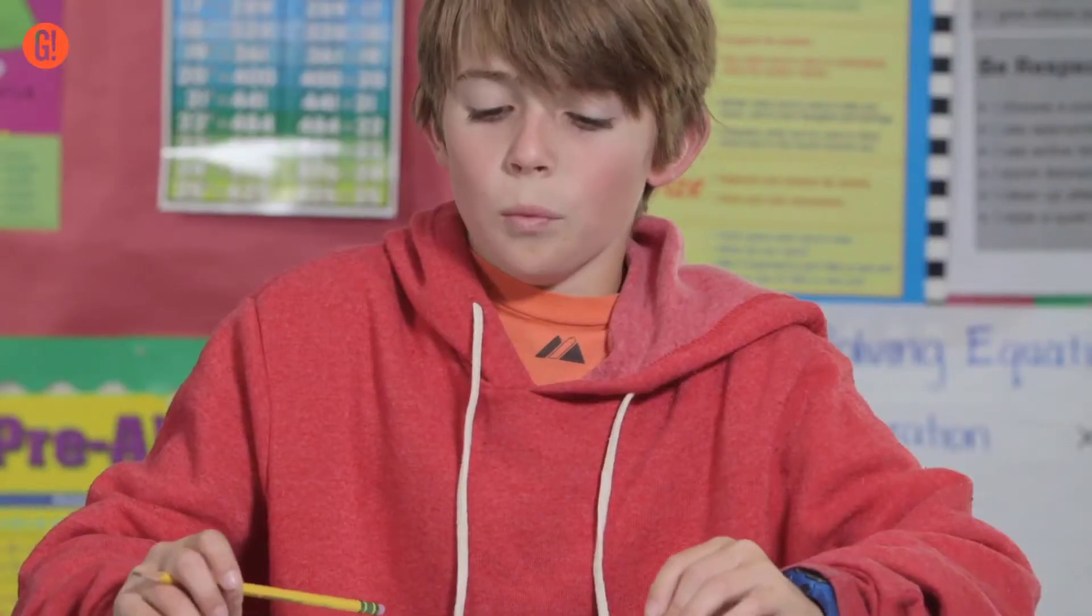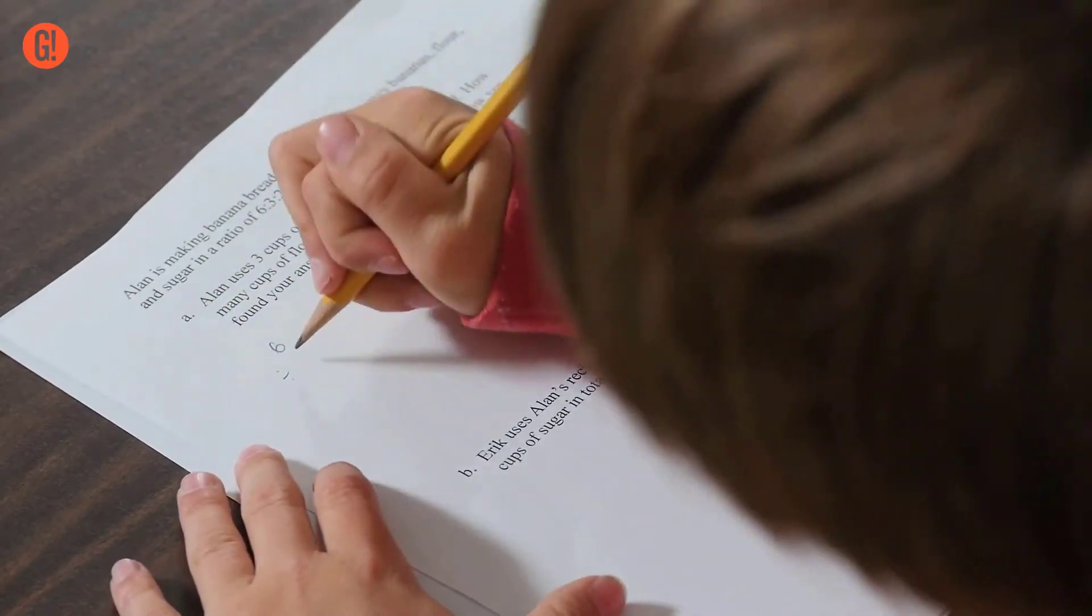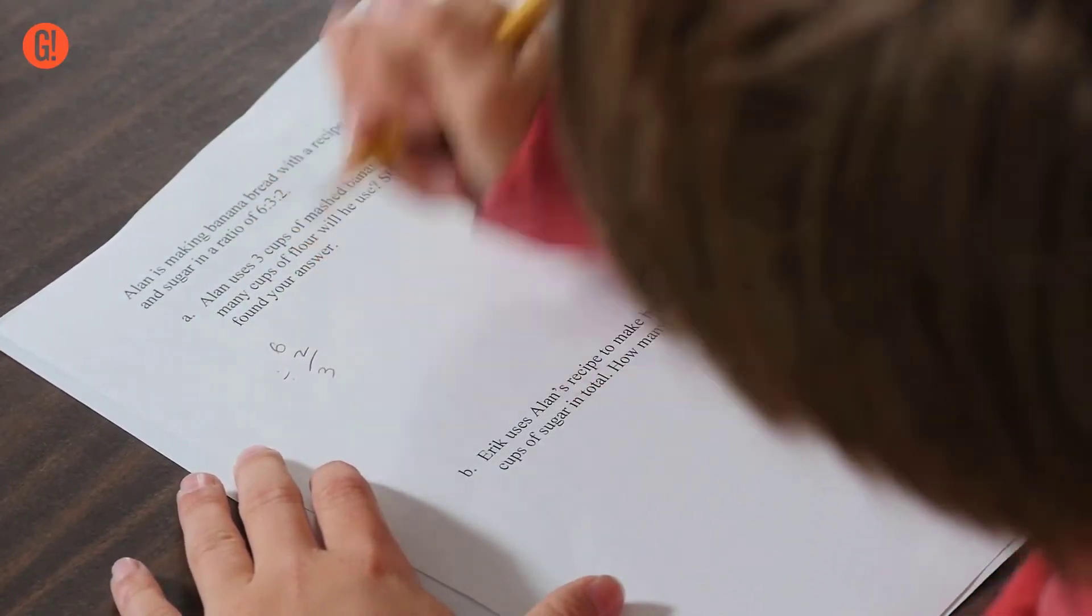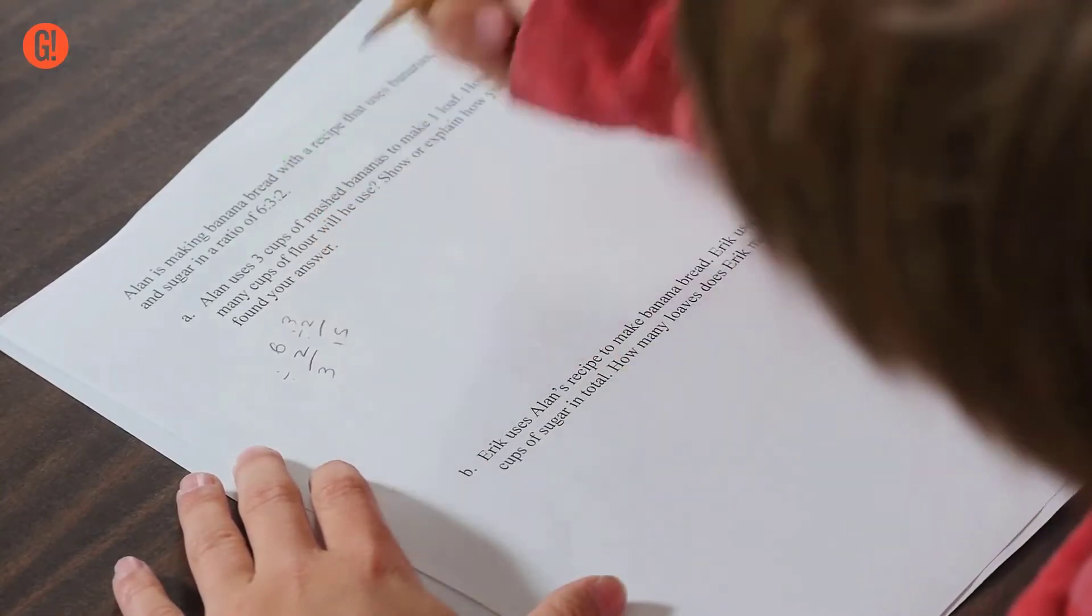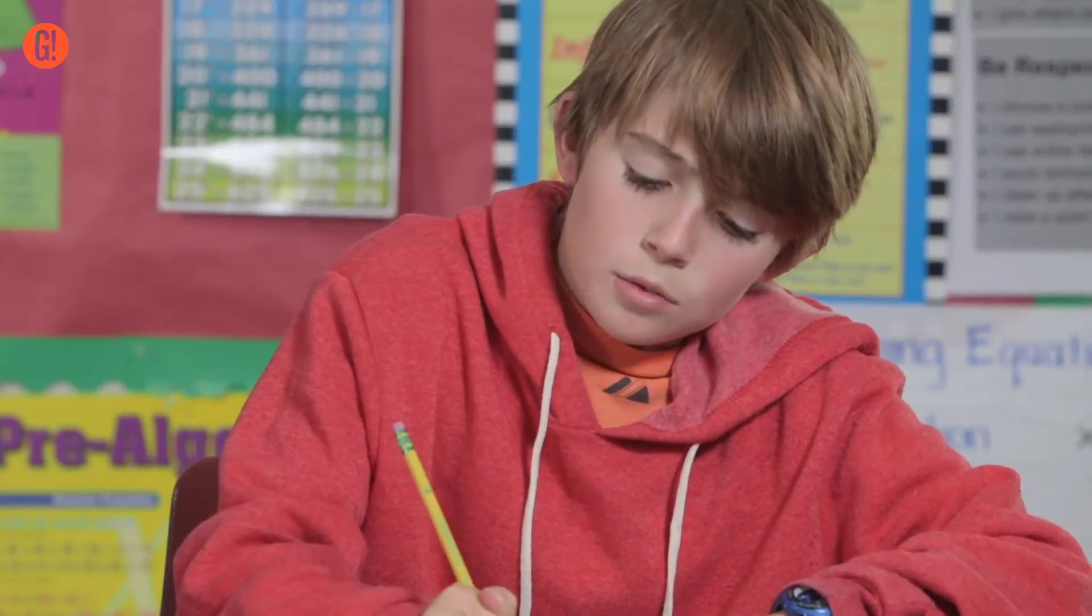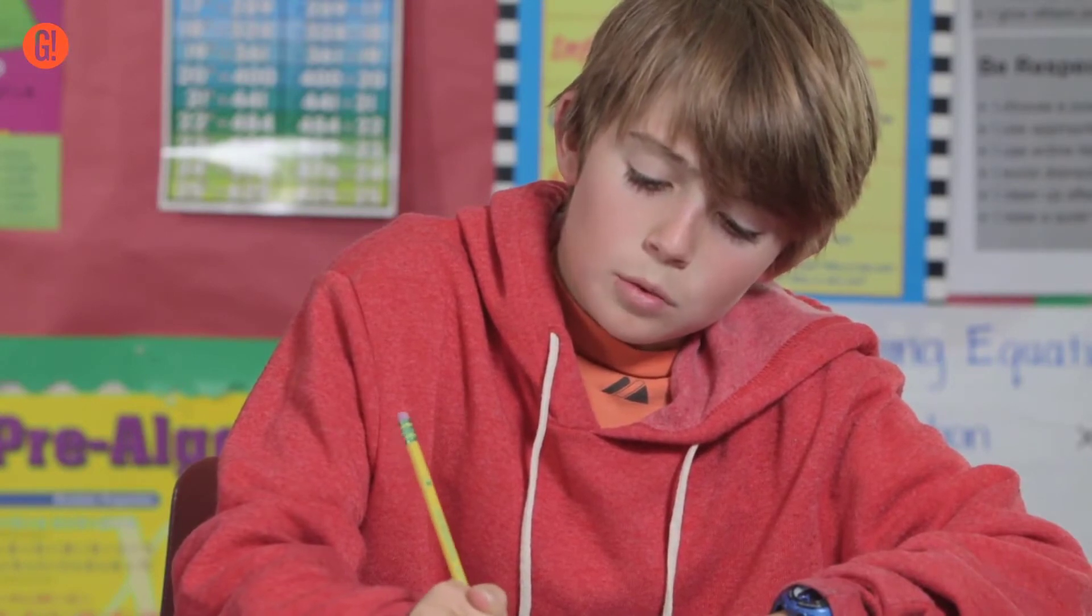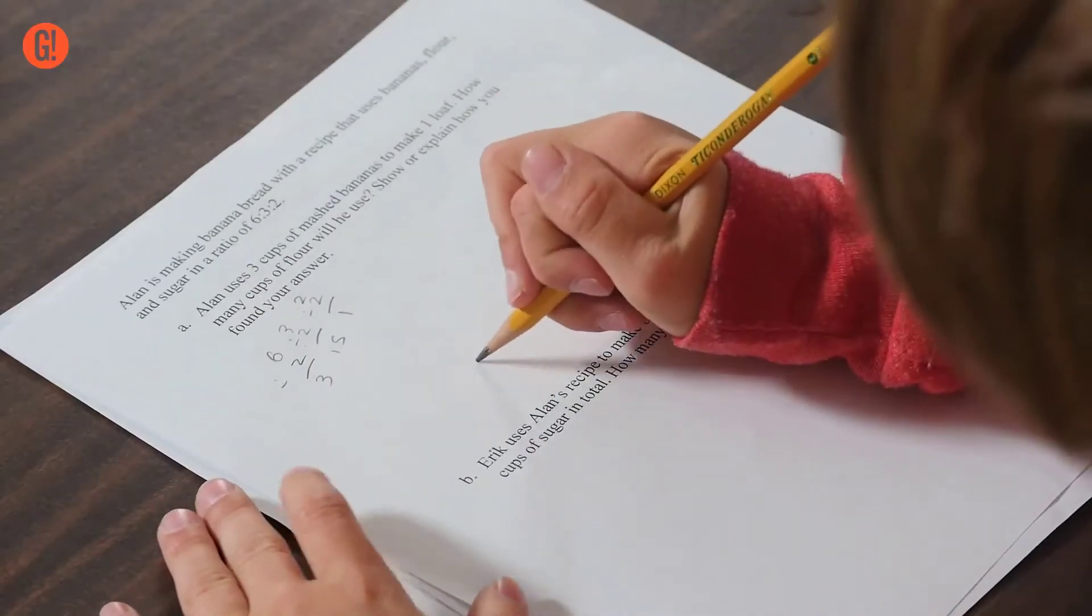Here, Eric dives right in without needing help. So you do 6 divided by 2 equals 3, 3 divided by 2 equals 1.5, and 2 divided by 2 equals 1. And the answer would be 1.5.